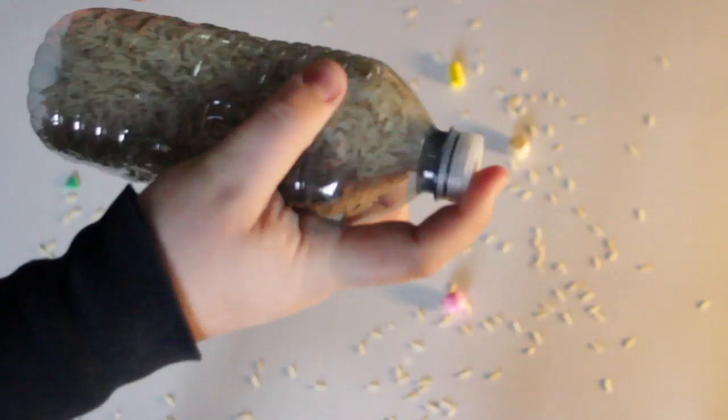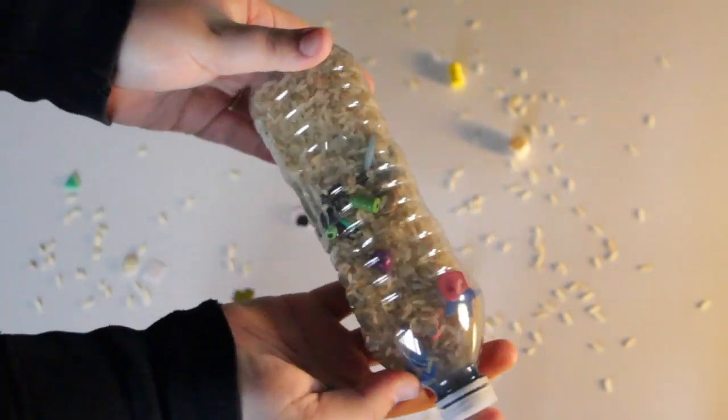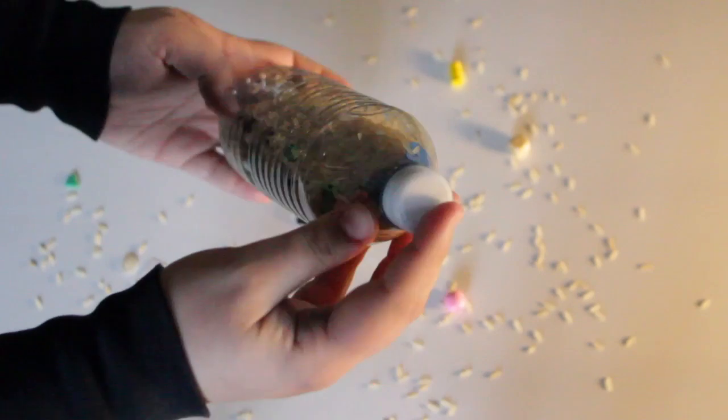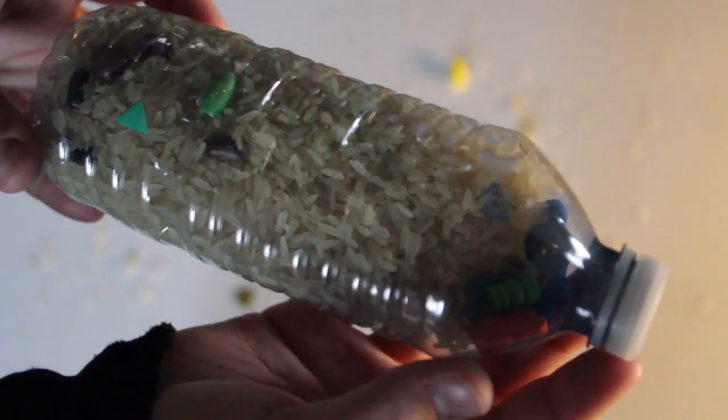Then you gotta put your lid on the bottle so you can shake up the rice. The rice will bury all of your different trinkets. Then it's up to you to try to see if you can find each one.